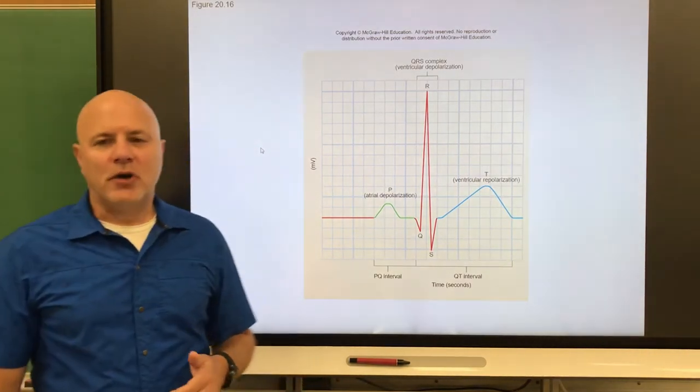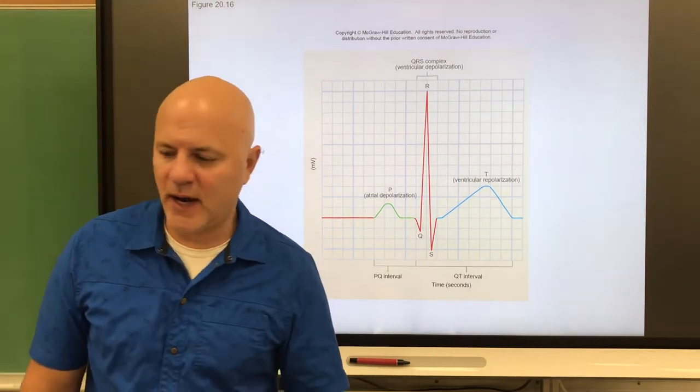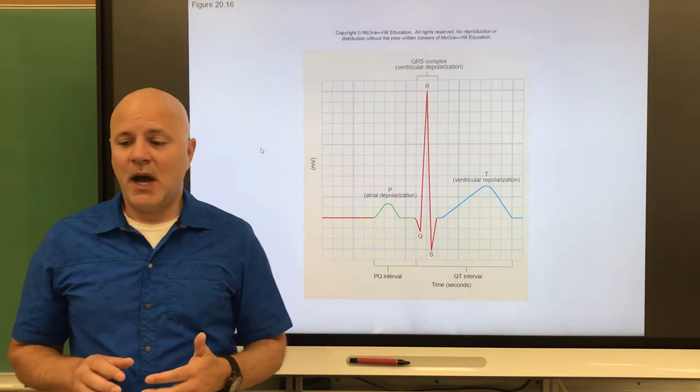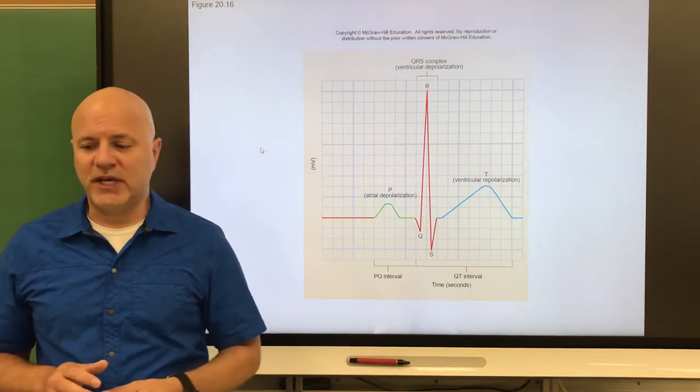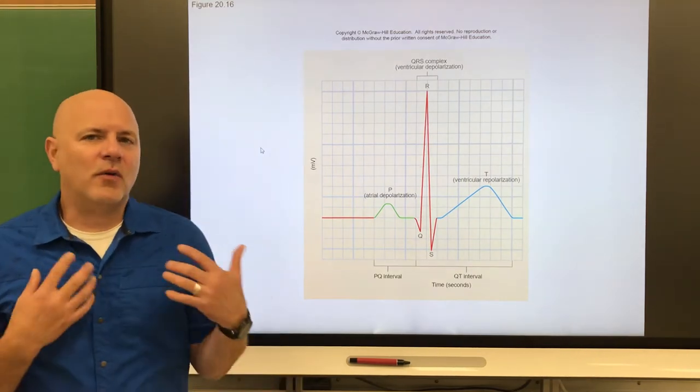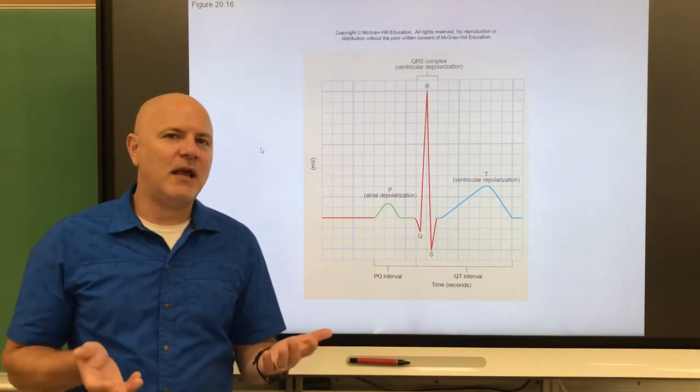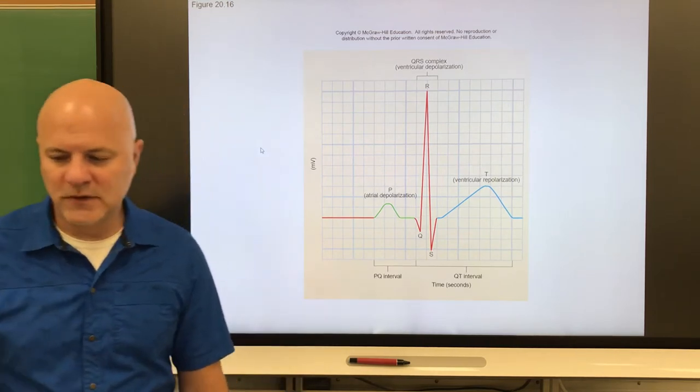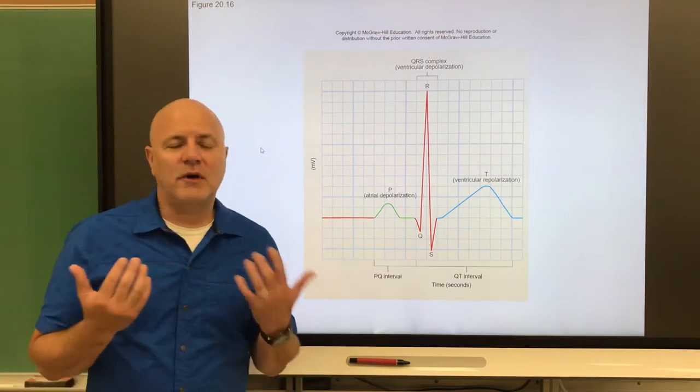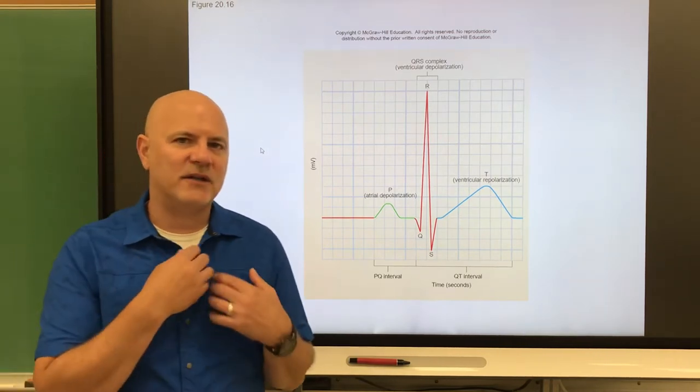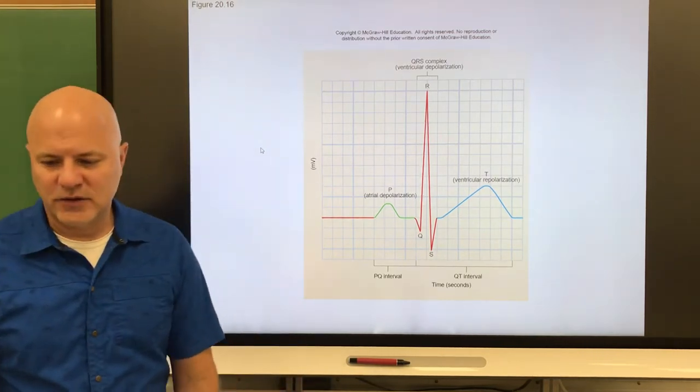All right, let's move on to electrocardiogram. An electrocardiogram, or ECG, also known as an EKG, is a recording of the electrical changes that occur in the myocardium during your cardiac cycle. If you're wondering where EKG comes from, the K is German - they spelled cardio with a K. Our body fluids can detect changes in electrical currents, so they put these little pads on you to detect those changes.